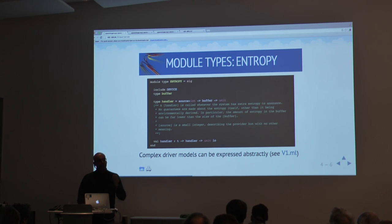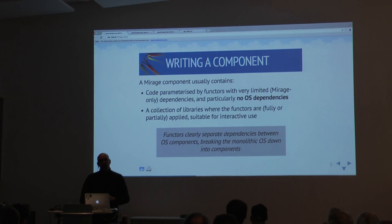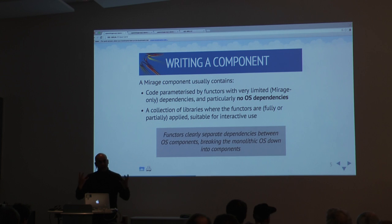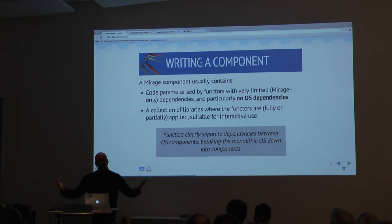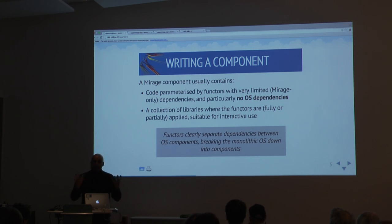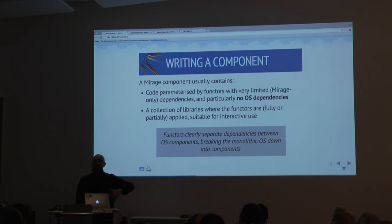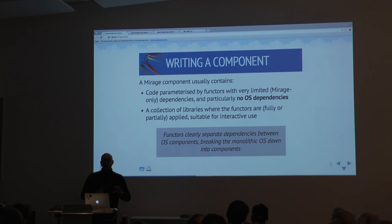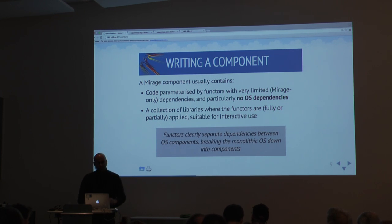Once we have these shapes, we want to build a component. The component defines code that implements that one component, but the critical feature is that when it needs something from the outside world, it doesn't just use Unix. Instead, it parameterizes itself across the functionality it requires. If I'm an HTTP stack and I need a TCP stack, I will not depend on one directly — I will make it a functor that depends on that bit of functionality. We use ML functors to separate and compose our device driver stack in the operating system. This is how Mirage fits all its bits and pieces together.